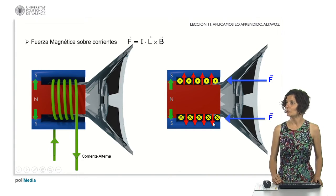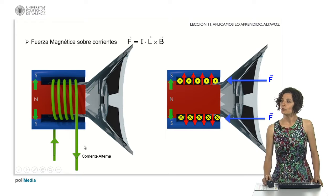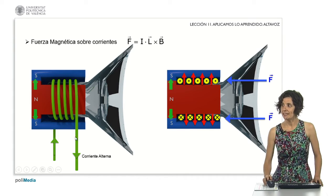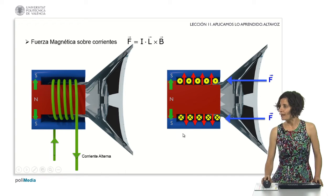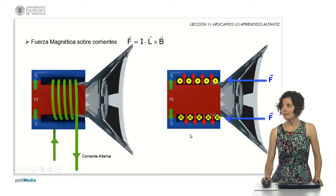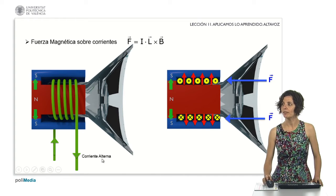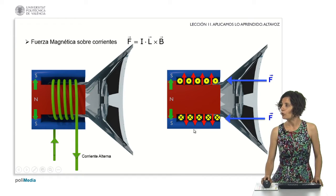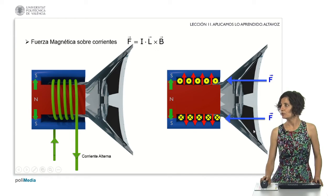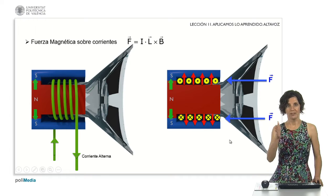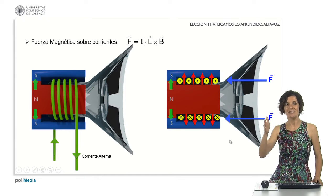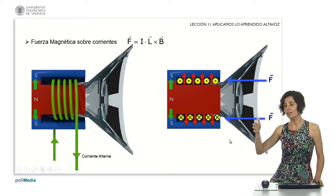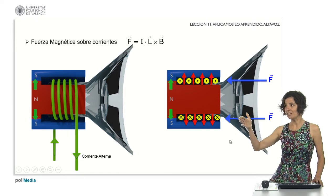What is the result? When an alternating signal intended for listening is introduced through this coil, the coil will move either to the left or right, oscillating at the same frequency as the input signal. As the coil moves, it drives the loudspeaker's membrane in synchrony. The membrane's motion displaces the air particles in front of it, creating a sound wave that travels through space to reach our ears.